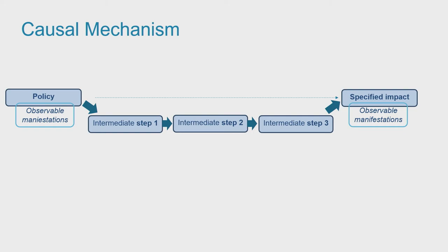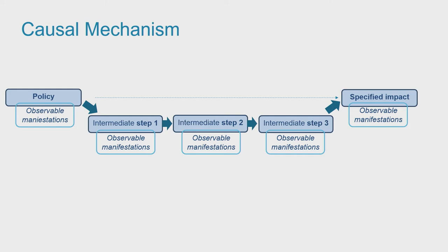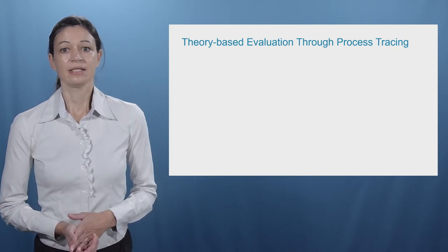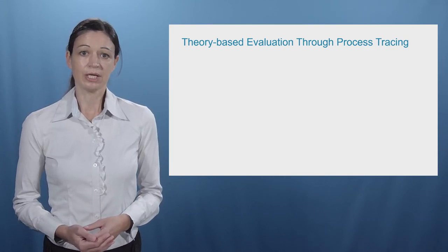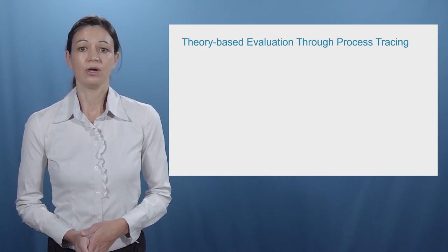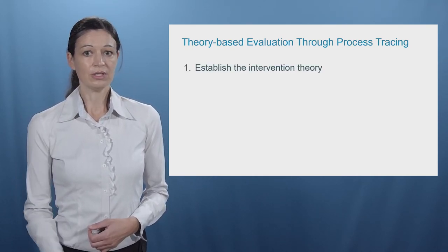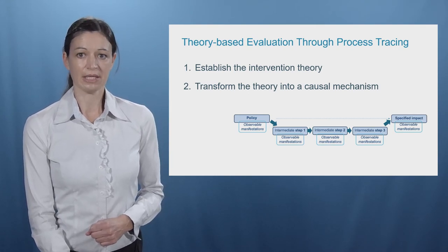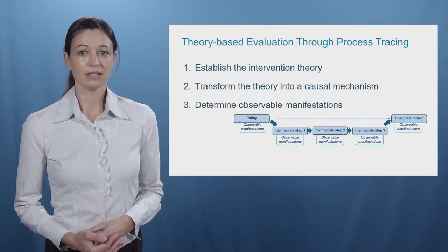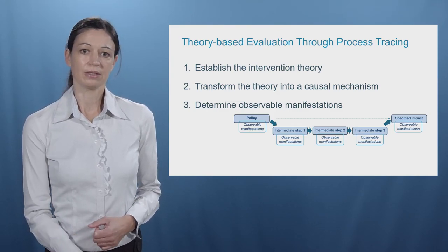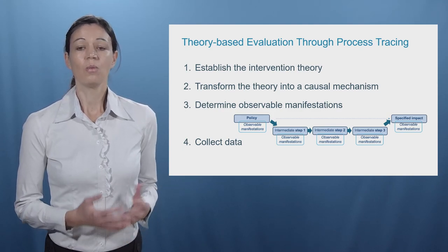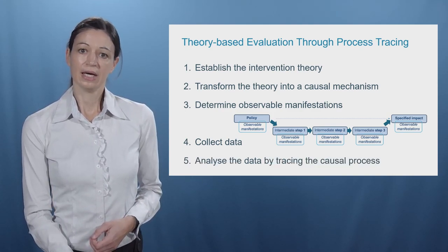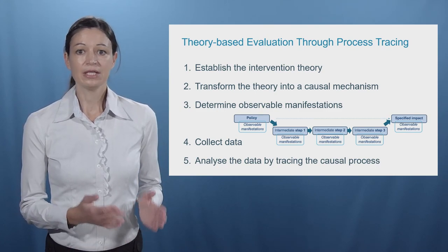After identifying all the intermediate steps, we need to specify the observable manifestations of each of them so that we can actually know how to test them. This means that if we conduct a theory-based evaluation through process tracing, we need to follow these steps: first, we establish the intervention theory, which is then transformed into a causal mechanism. Based on this, all observable manifestations need to be determined. This then tells us what data we need to collect, and then we analyze this data by tracing the process.